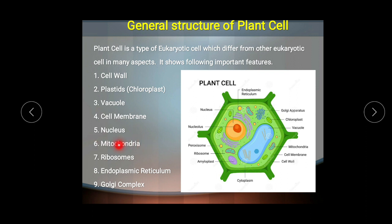The next organelle is the mitochondria, also called the powerhouse of the cell because it generates energy. Through cellular respiration, complex organic materials such as food are converted into simple inorganic molecules, releasing energy. The mitochondria performs this cellular respiration and generates energy — that is why it is called the powerhouse of the cell.